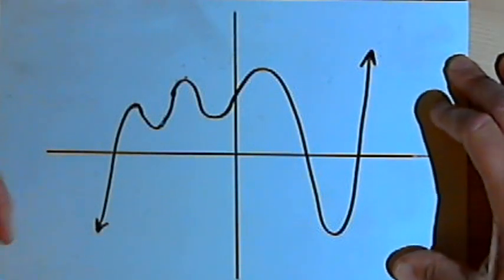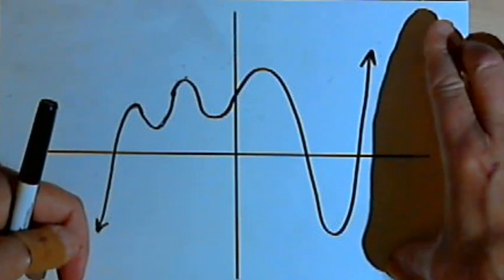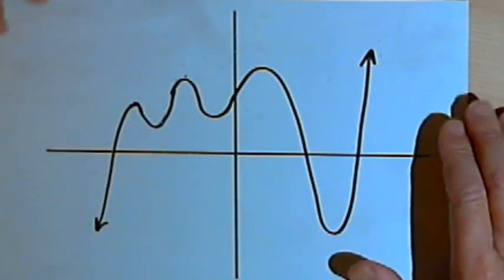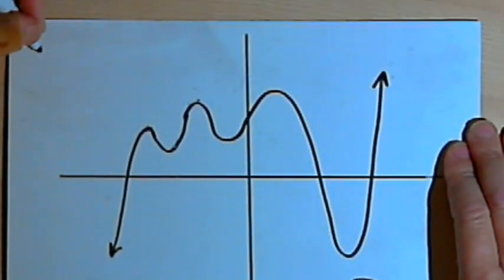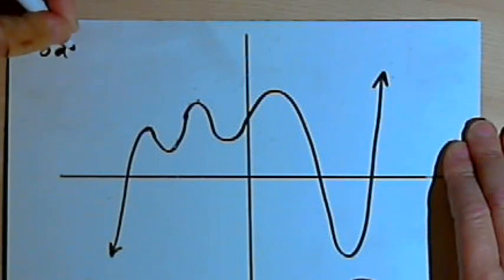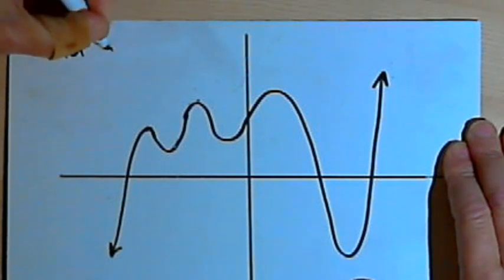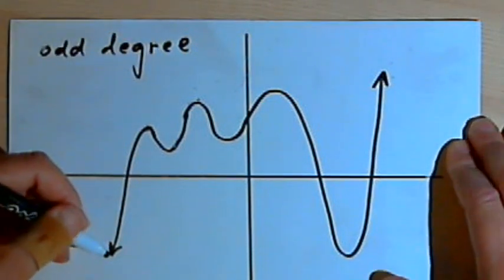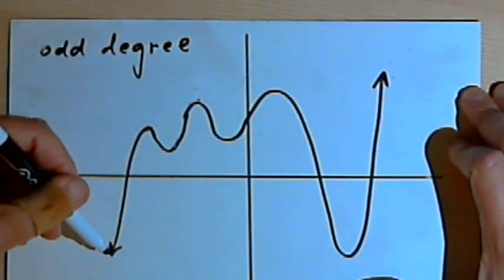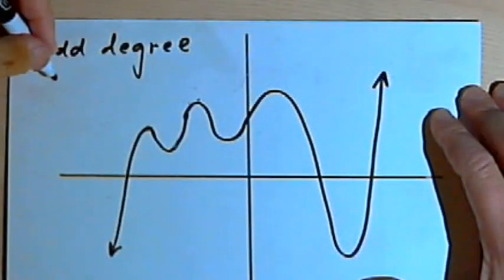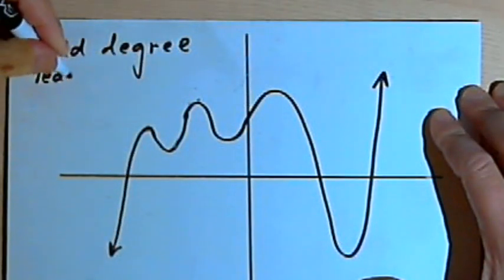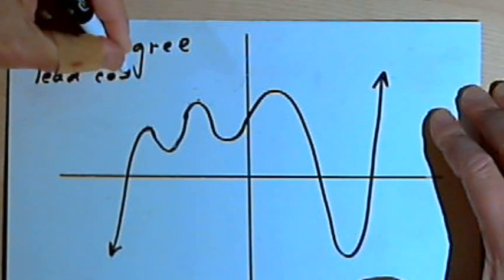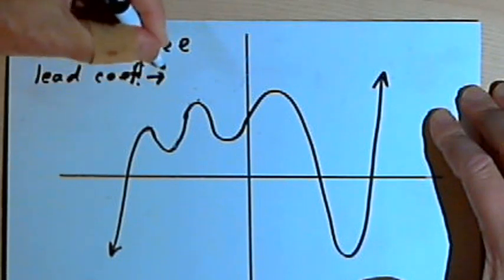In this case, the end behavior has one end going down and one end going up. When the ends go in opposite directions, that means that you've got a polynomial with an odd degree. When it's odd and the left end is down and the right end is up, that means that the lead coefficient was positive.